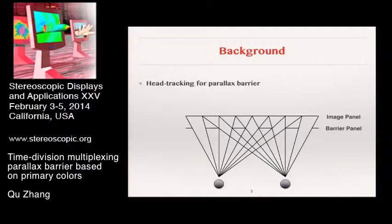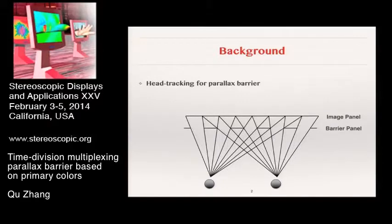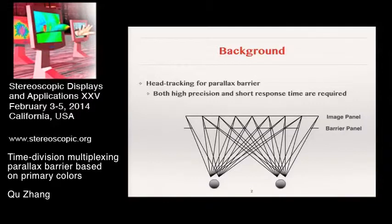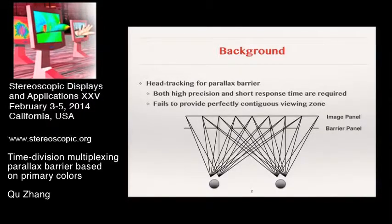By tracking the position of the viewer and adjusting the barrier accordingly, three spots can be increased. However, since the range of each sweet spot is very narrow, both high position accuracy and short response time are required for the involved head tracking. Furthermore, barrier panels made of LCDs can be adjusted smoothly since they have a minimum limit of one pixel, so some areas can't be covered perfectly and a perfectly contiguous viewing zone is impossible.